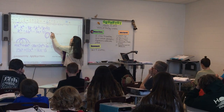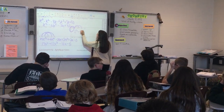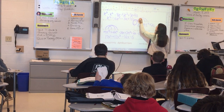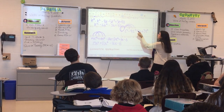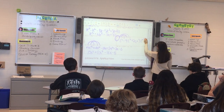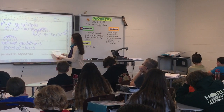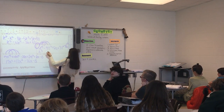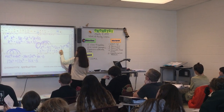Number 6. So z cubed, minus 4z squared, plus 2z. The board is messy. And then plus 3z squared, minus 12z, and then plus 6. Same thing — so z cubed, minus z squared, minus 10z, plus 6.